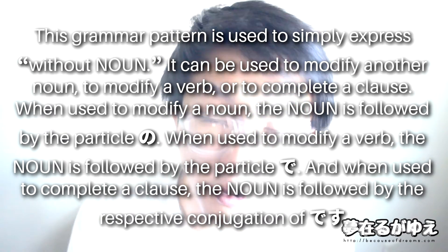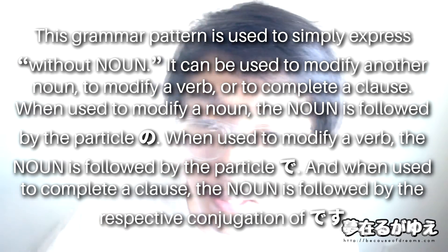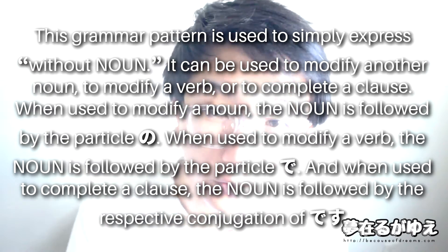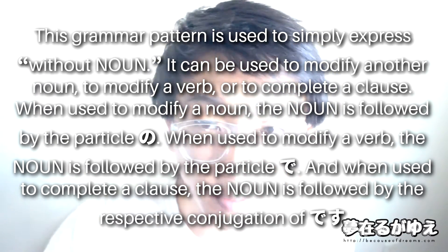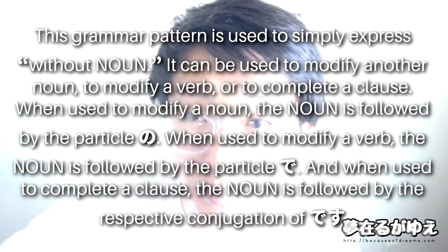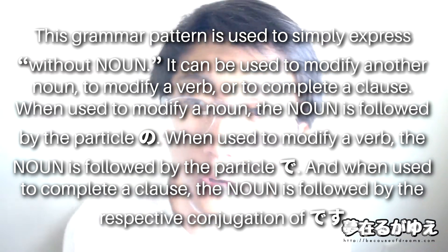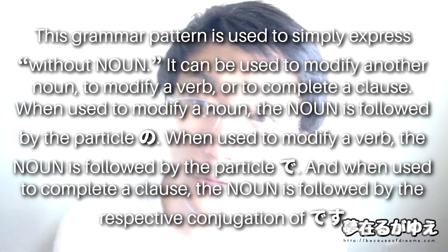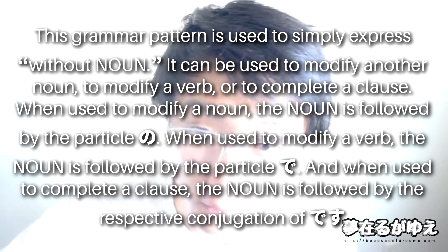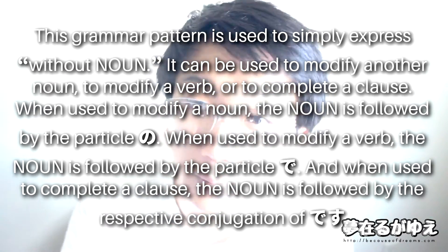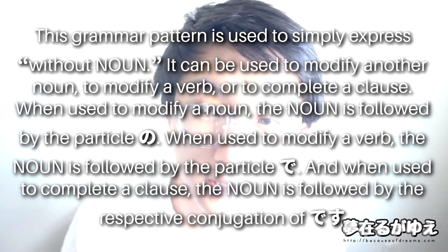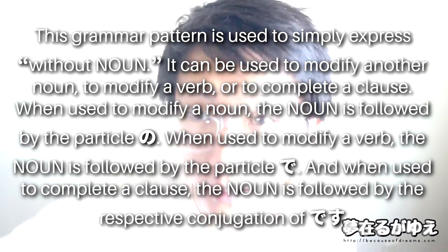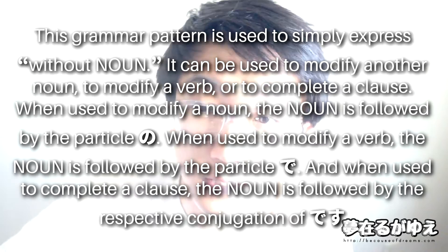If we use this grammar pattern to modify another noun, then nashi is going to be succeeded by the particle no. If we use it to modify a verb, then nashi is going to be succeeded by the particle de. And if we just use this to complete the clause and end it, then nashi is going to be followed by da or desu. This particle alignment should be familiar — no is commonly used for noun modification, de is used with verbs to express the means of doing that verb, and da or desu ends a clause, such as with dakara or desukara.